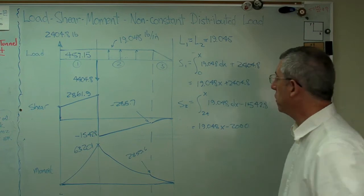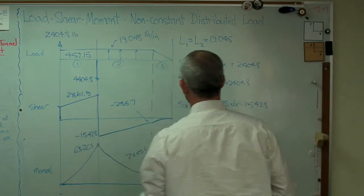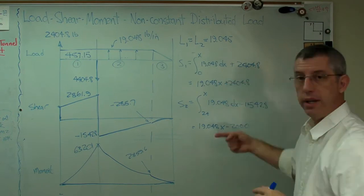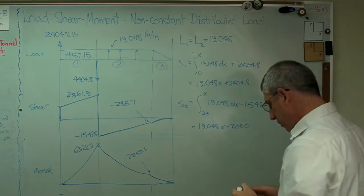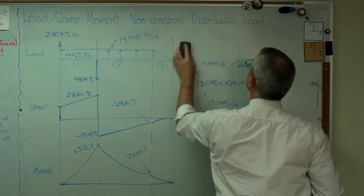So those are the first two. So I've got S1, S2. Those are straight lines. That's a straight line. That's a straight line. Now I've got to make a parabola.